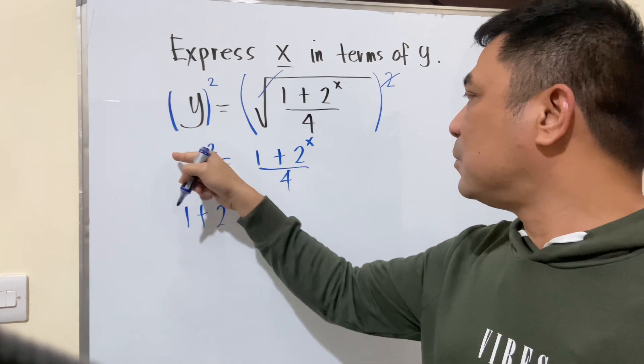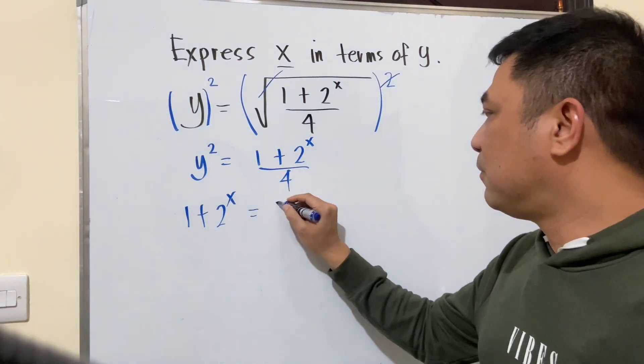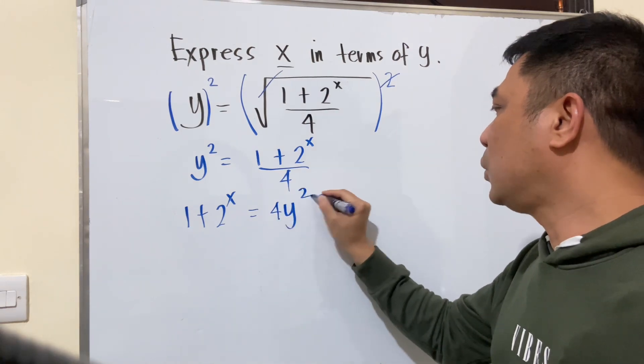To remove 4 here, you should cross multiply to the left side. So 4 times y squared, that is 4y squared.